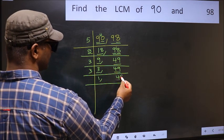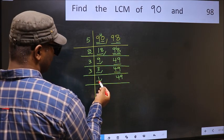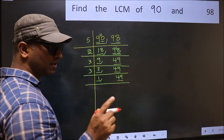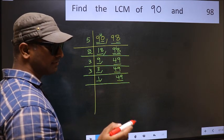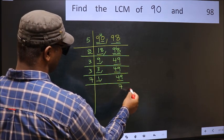Now we got 1 here, so focus on the next number, 49. Always remember 7 into 7 is 49. That is, 7 times 7 is 49.